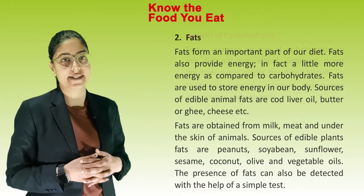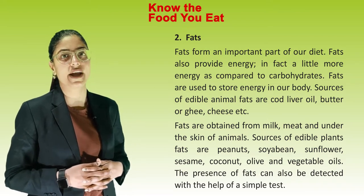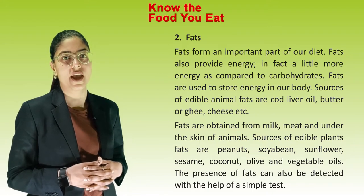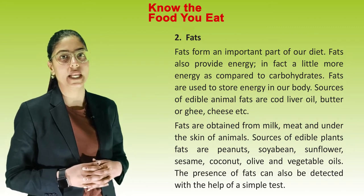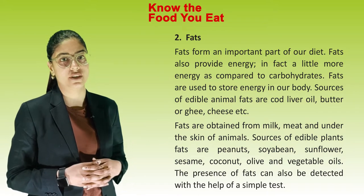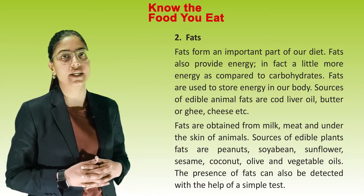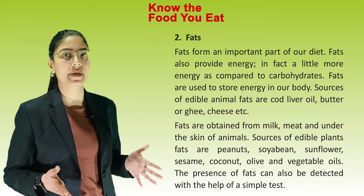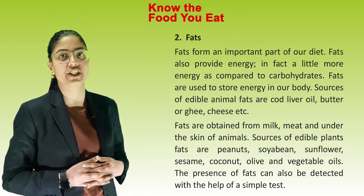Next one is fats. Fats form an important part of our diet. Fats also provide energy — in fact a little more energy as compared to carbohydrates. Fats are used to store energy in our body. Sources of edible animal fats are cod liver oil, butter or ghee, cheese, etc. Fats are also obtained from milk, meat and under the skin of animals. Sources of edible plant fats are peanuts, soya bean, sunflower, sesame, coconut, olive and vegetable oils.